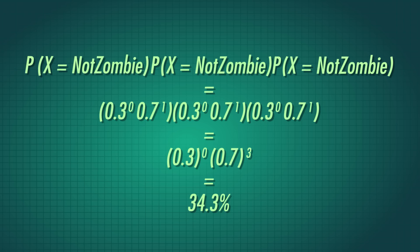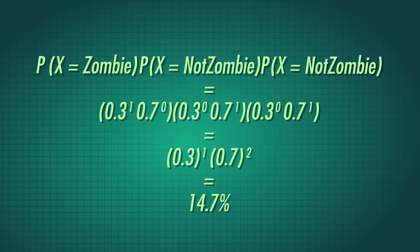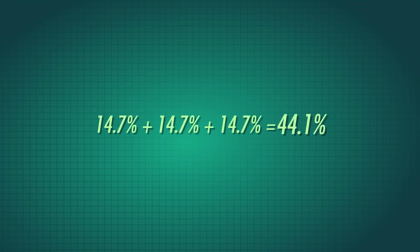But don't forget — you'll also be okay if only one person has a latent infection: two successes and one failure. There are three ways this could happen, since any one of your three friends could be infected. So there's a 3 times 14.7%, or 44.1% chance, that only one friend will be infected. Combining the 44.1% chance that only one friend is infected with the probability that all their blood is zombie-virus-free, we can see there's a 78.4% chance that this life-saving transfusion will go your way. You're not gonna be a zombie — probably.